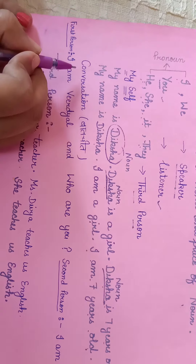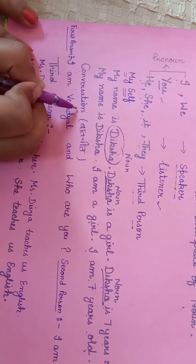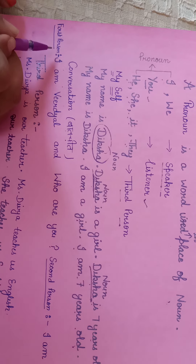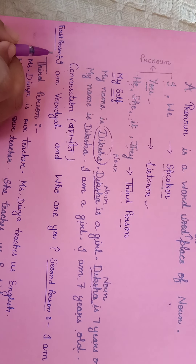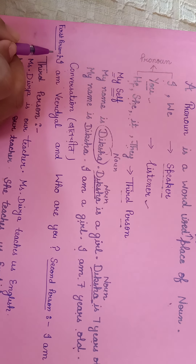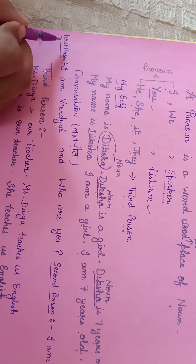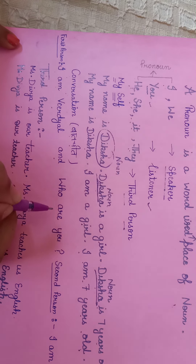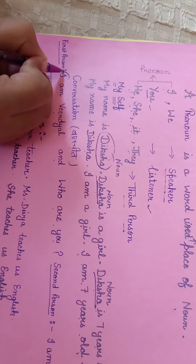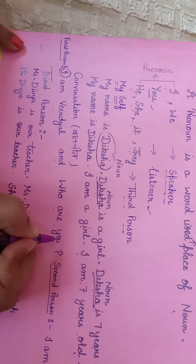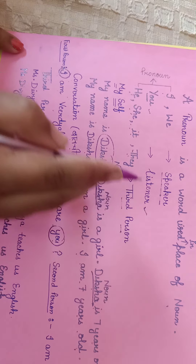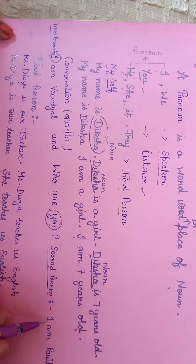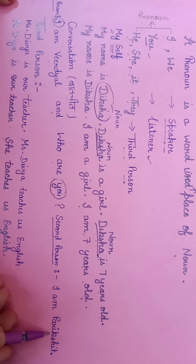Let's take another example — a conversation, that meaning, a baatchit. I am showing you a conversation between two persons. First person says: I am Vidyal. And who are you? Here, 'I' is first person and 'you' is the listener. So the second person gives the answer: I am Prickshith.